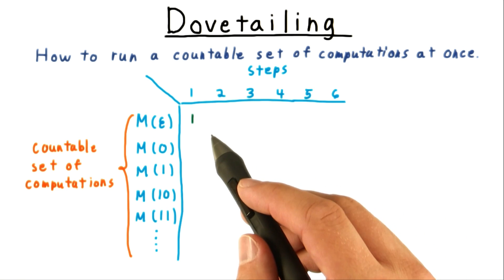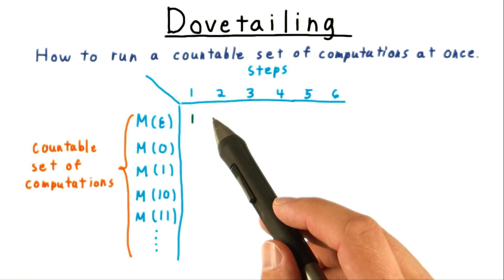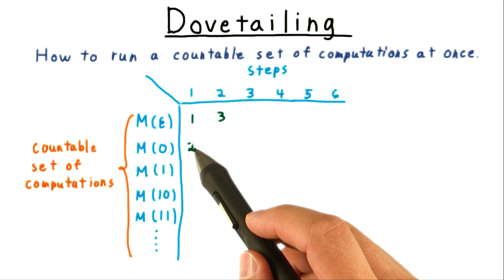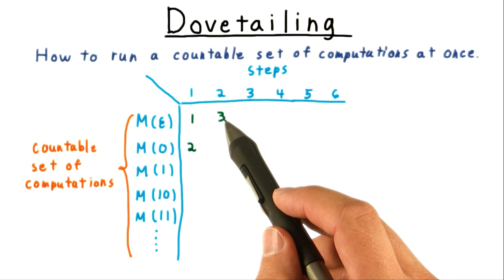We go diagonal by diagonal, first simulating the first computation for one step, then the second computation for one step, and the first computation for two steps.